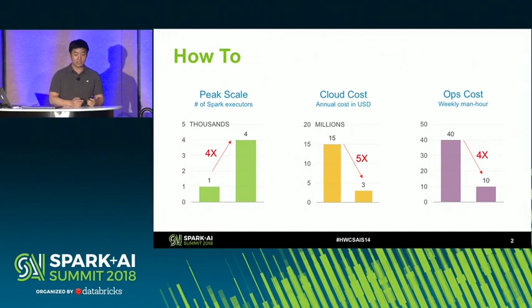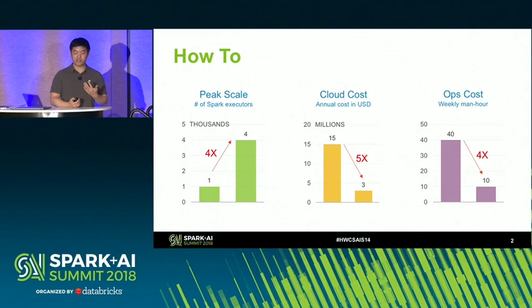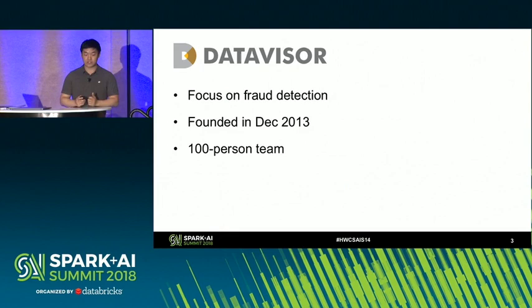Here are the outcomes of the system that we built. We managed to scale the peak of our Spark environment by 4x to support our company business. At the same time, we cut down the cloud cost by 5x compared with a naive approach. We also pay attention to operational cost because we are a startup company and we are very sensitive to that.